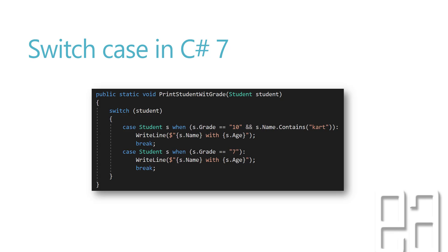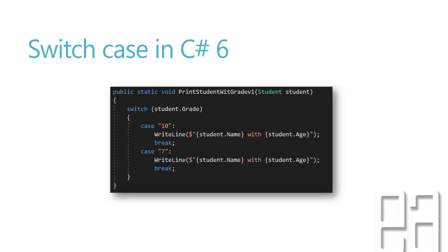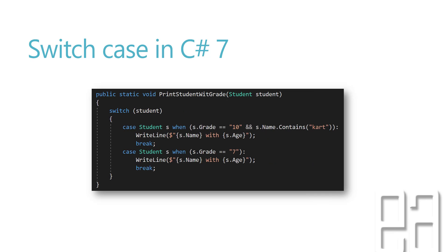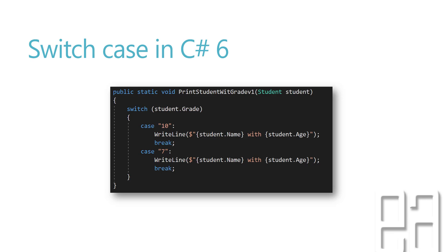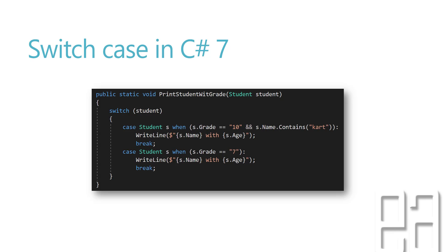Right now with C# 7.0 it is possible with the switch case. You can pass the student object itself directly into the switch statement. For the case, you can create a type variable for the student and use the when keyword — for example, when s.grade equals 'first' and s.name contains 'cart'. You can combine different kinds of conditions in the case statements, which was a limitation in earlier versions. That's why the when keyword is very, very helpful. Let's see this in action.